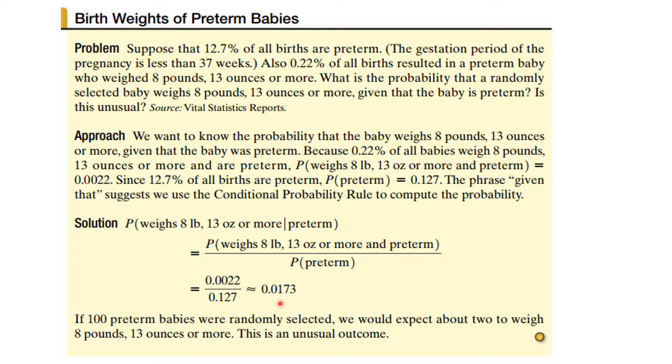And that's approximately this number, which is a little bit more than 1% but not 2%. So if 100 preterm babies were randomly selected, you would expect about 2 to weigh 8 pounds, 13 ounces or more. And this is an unusual outcome because it is less than 5%.